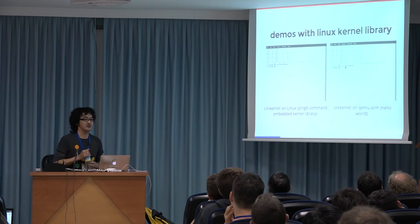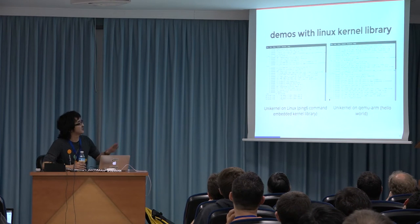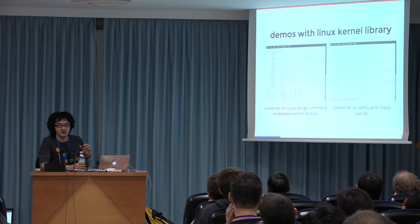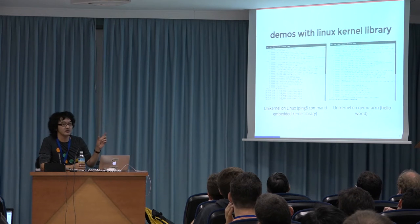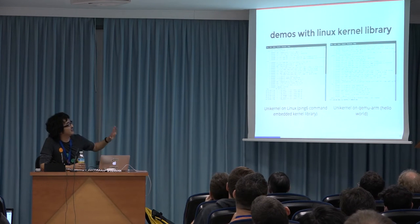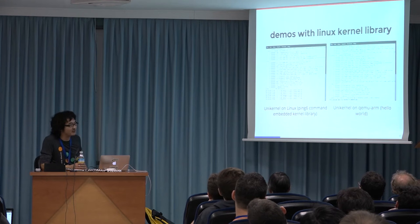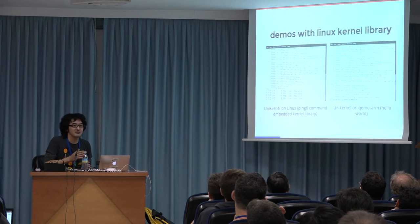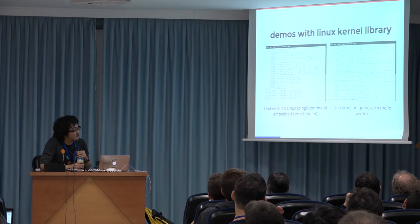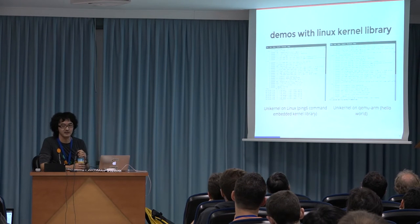This is a demonstration of using LibOS as a unikernel. The left part uses a ping6 command with an embedded library of the latest Linux kernel, running on Linux but capable of running on other operating systems in a virtual machine with a single processor. The right part shows a hardware program running on ARM architecture without any operating system.